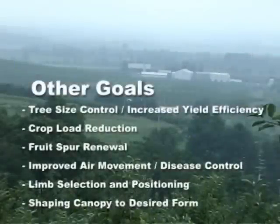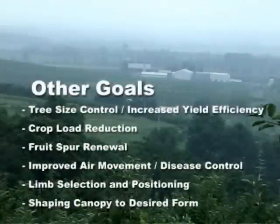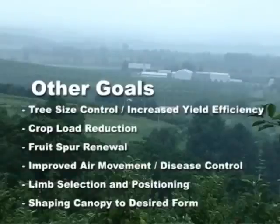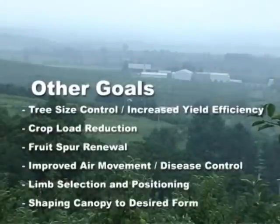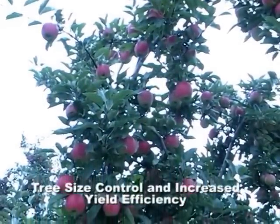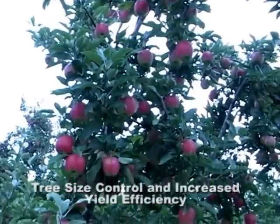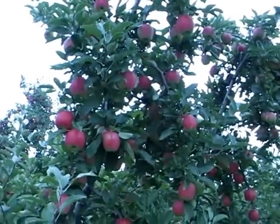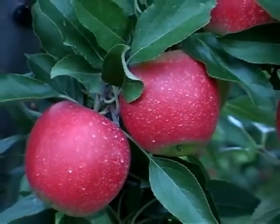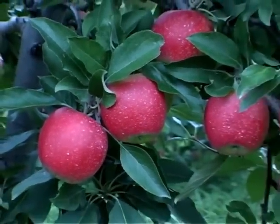Other goals to consider are tree size control and increased yield efficiency, crop load reduction, fruit spur renewal, improved air movement, disease control, limb selection and positioning, and shaping the canopy to desired form. First, controlling tree size and increasing yield efficiency: pruning is a dwarfing process and can be used to maintain a tree in its allotted space in an orchard row. Optimizing pounds of fruit per pounds of wood equates to optimum yield efficiency.